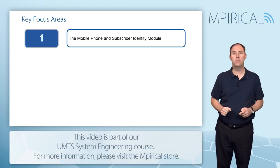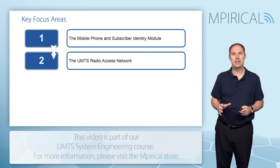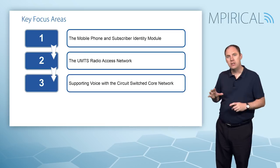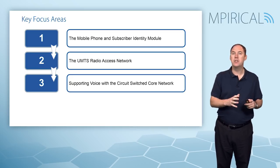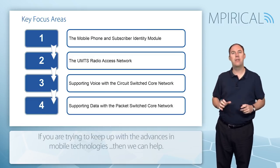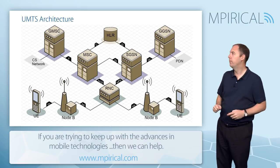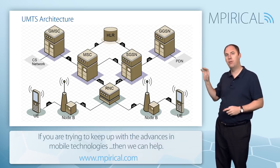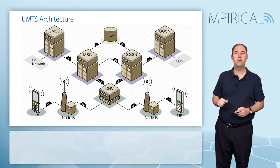We're going to start by discussing the mobile and the subscriber identity module. We'll then look at the UMTS radio access network, move on into the core network, specifically looking at how we support voice in the circuit switch core and how we support data in the packet switch core. Here's a very simplified view of the key functions in a UMTS network.